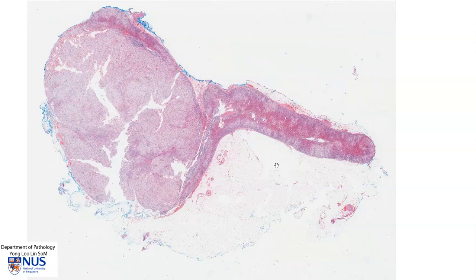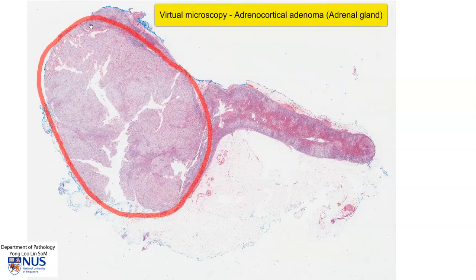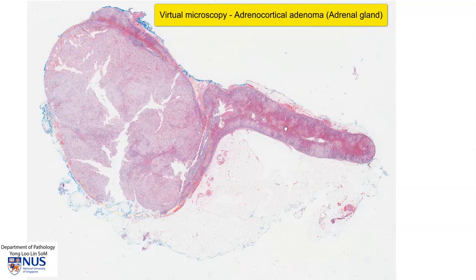Hello, this is a virtual microscopy slide showing the adrenal gland, and we have a very obvious ovoid nodule here, which is a tumour. But let's take a quick look at the recap of normal adrenal histology.